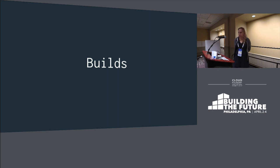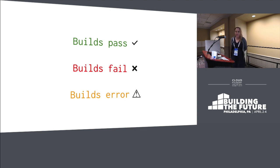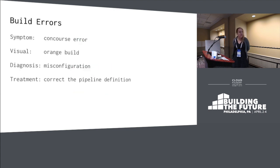So, part one is builds. Builds pass — it's great, everyone loves it when it passes. And builds fail — that's also okay, totally fine. Sometimes your tests don't pass and it's good that you failed. But then sometimes you get an error. If you're using Concourse — this talk is mostly focused on Concourse, that's the tool we use to run our pipelines — if you error and Concourse turns all orange on you, that is not a place you want to be. Errors are wrong.